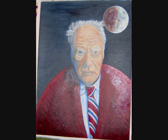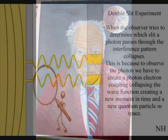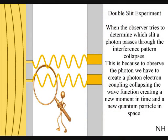When the observer turns on a detector to determine which slit a photon passes through, the interference pattern collapses. At that moment in time, the interference pattern disappears, because to observe the photon, we have to create a photon-electron coupling, collapsing each wavefront into a new quantum particle that will have its own position in space and time.